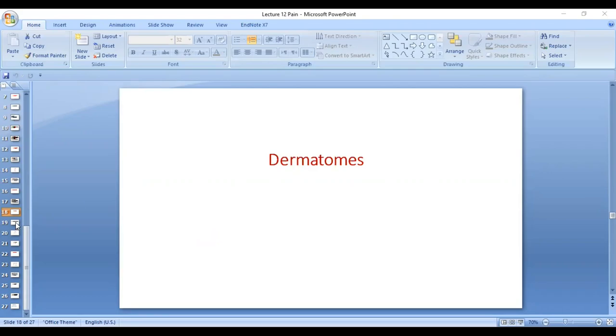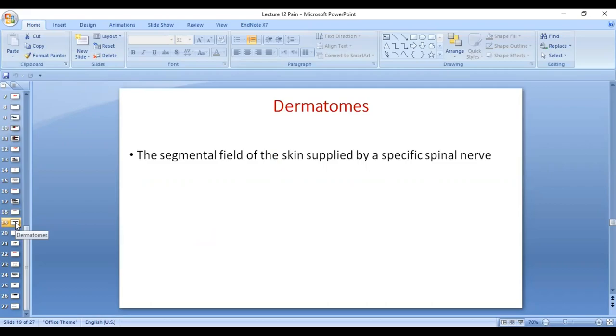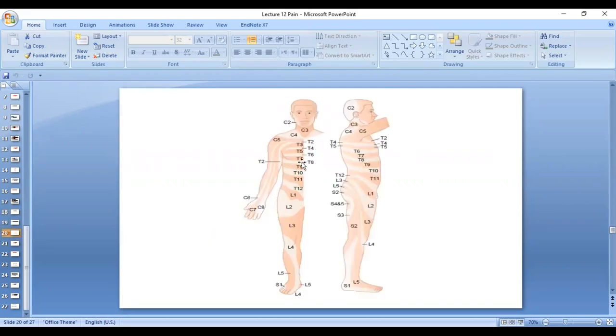A dermatome is the segmental area of skin that is supplied by a specific spinal nerve. These are the different dermatomes. You are very familiar with them in anatomy.